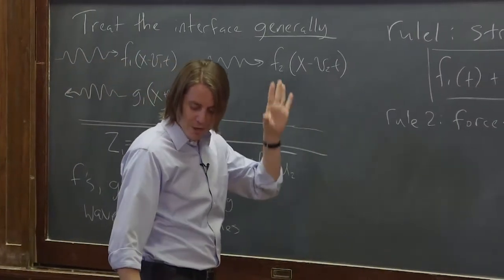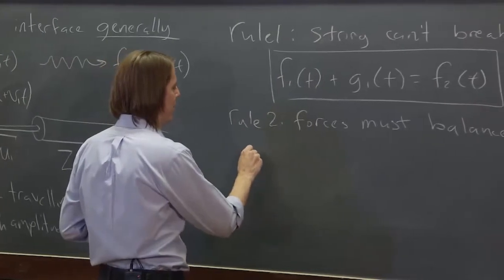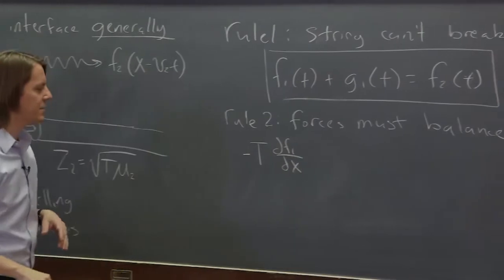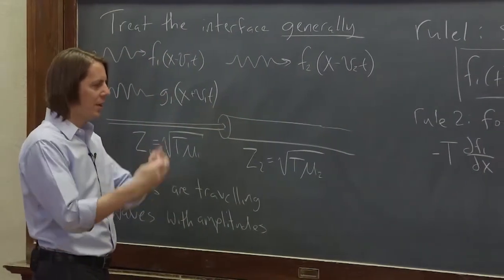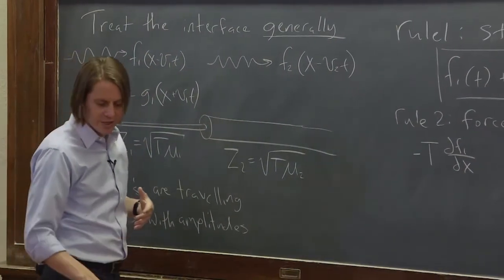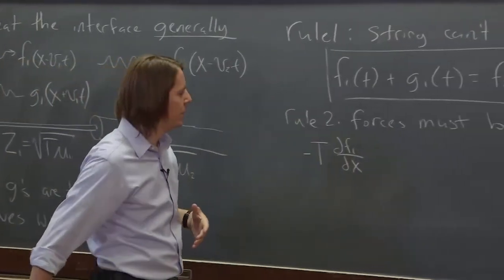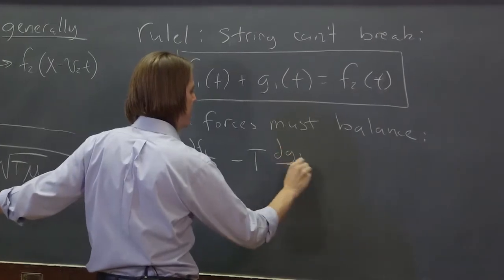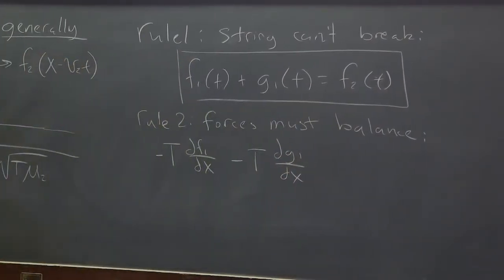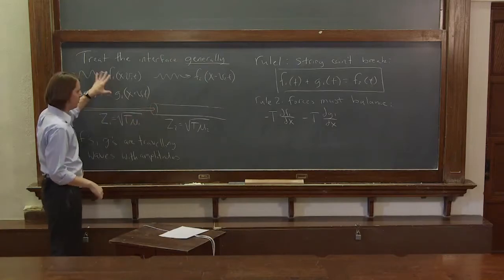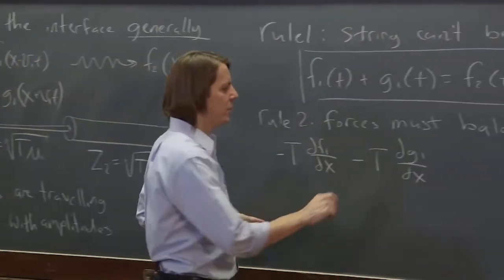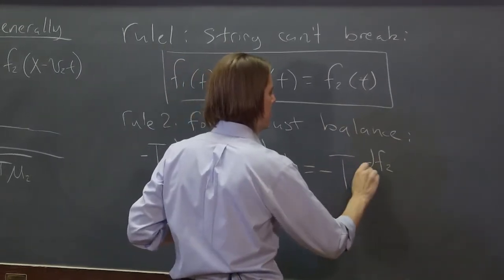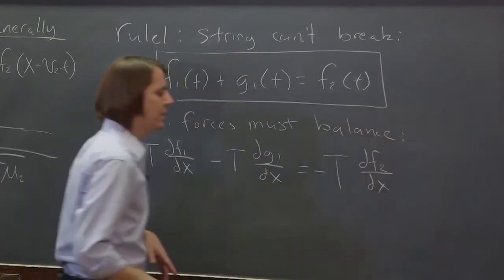And we know from way back thinking about these things is that it's minus t df1/dx. That's what we calculated earlier, is that the force is minus tension df/dx. And then this one would be on the left, you would also have minus the tension dg1/dx. So the total force on this side would just be the sum due to the two motions, whatever they are. And those equal the right side minus t df2/dx.